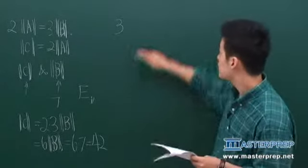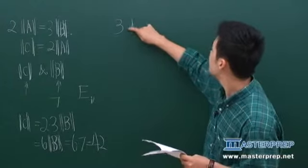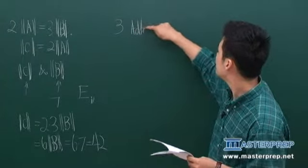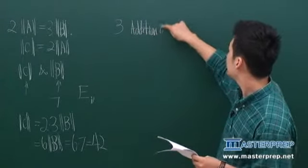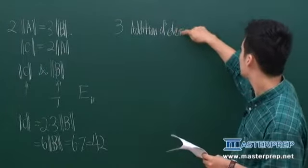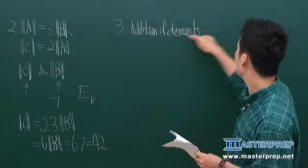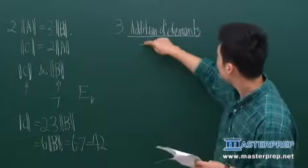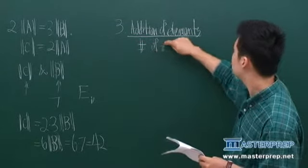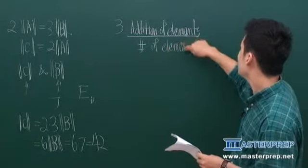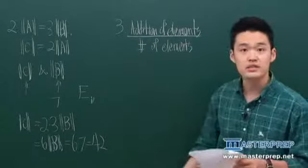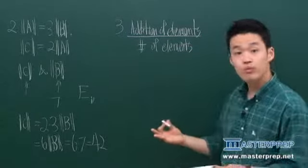So arithmetic mean, in this case, is something like the following. So elements, addition of elements over number of elements is actually arithmetic means.